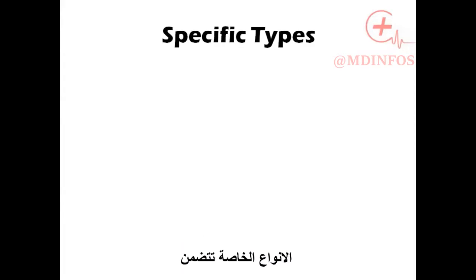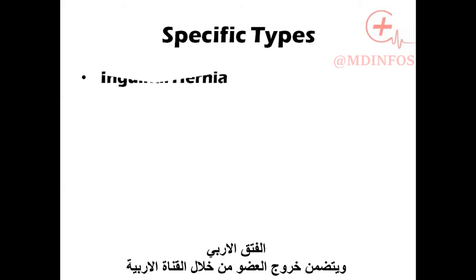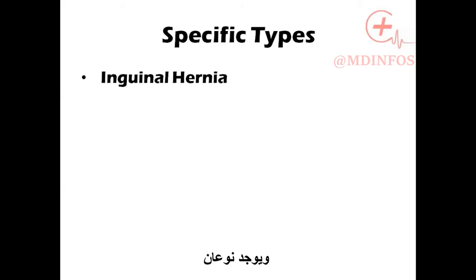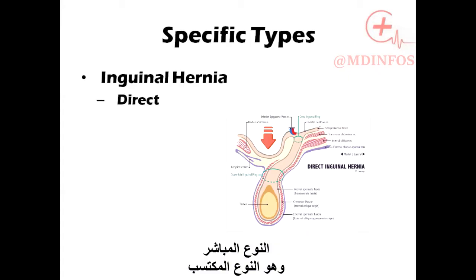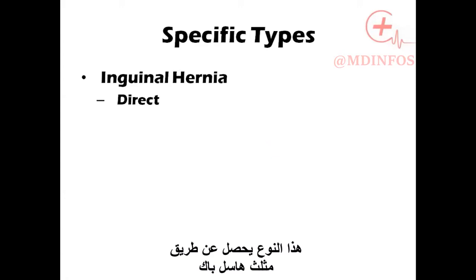Specific types include the inguinal hernia, which is a hernia that protrudes through the inguinal canal. It has two subtypes. The direct inguinal hernia, which is the acquired type, occurs through the Hesselbach's triangle.